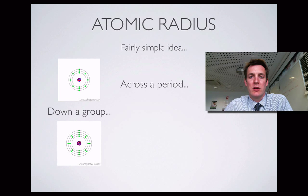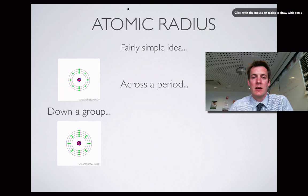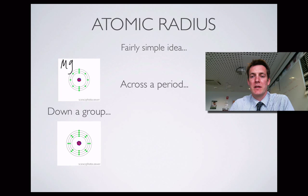We'll start off by looking at atomic radius. This one is fairly self-explanatory and quite a simple idea. If you imagine the atom as we have in these three diagrams - this being a magnesium atom and this one being a sodium atom - it doesn't really matter what they are.